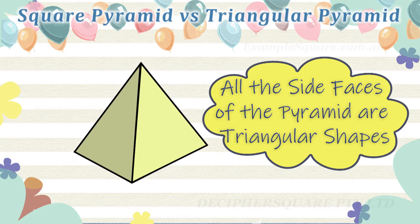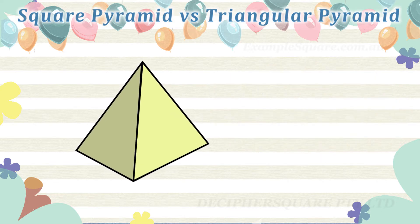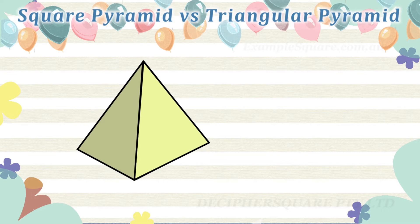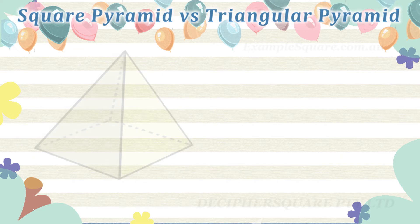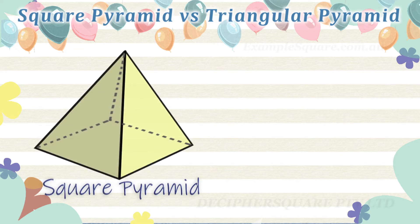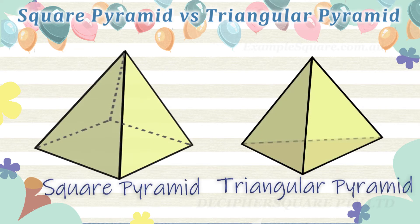There are several types of pyramids. Pyramids have one base and are often described based on the shape of that base. A square pyramid is a pyramid with a square base. A triangular pyramid is a pyramid with a triangular base.